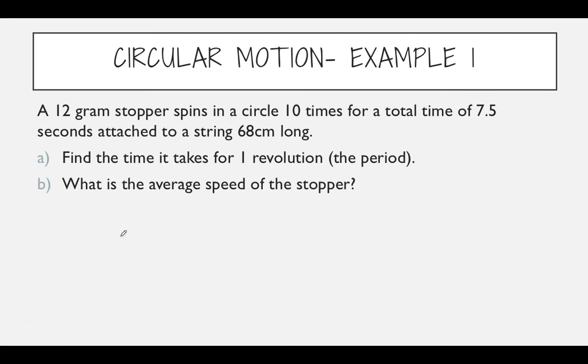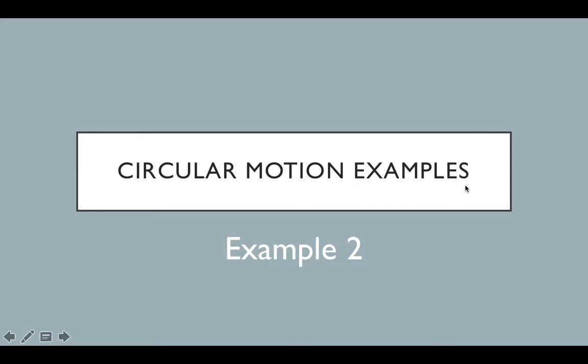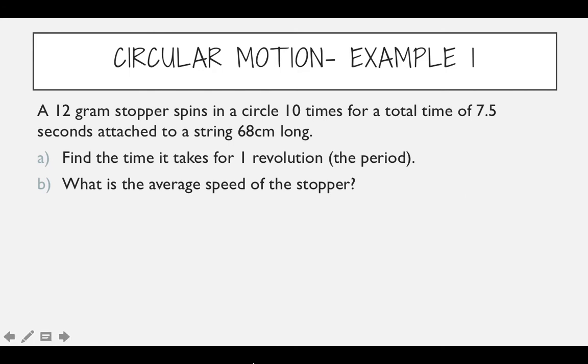So let's first draw a little scenario. What is going on here? We have the stopper connected to a string. It's being spun horizontally above someone's head. Here's a person holding it. You're going to do this in a lab very soon. So the stopper has a mass of 12 grams, which is 0.012 kilograms. And it has a radius of 68 centimeters, so if it's 68 centimeters, that's equivalent to 0.68 meters.